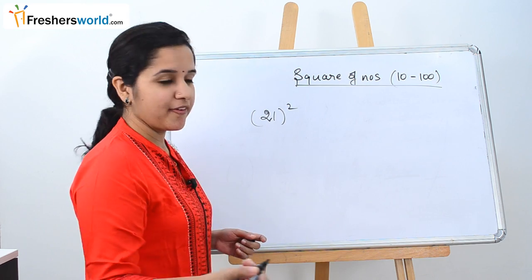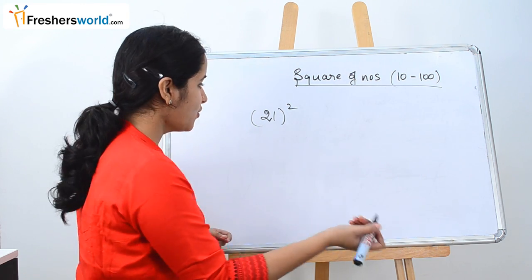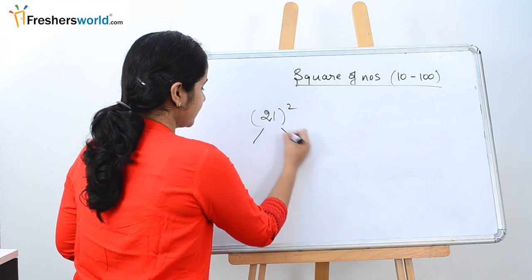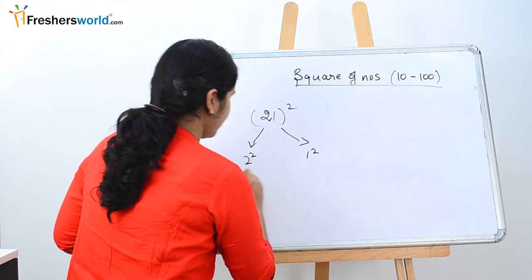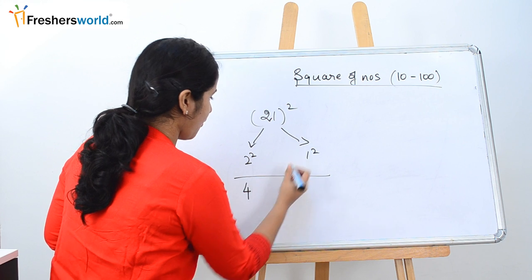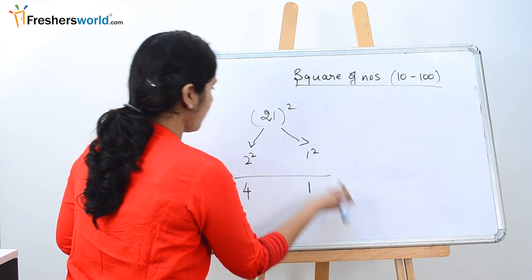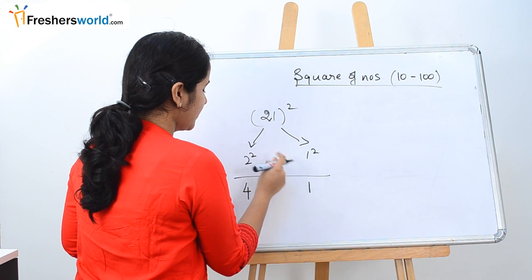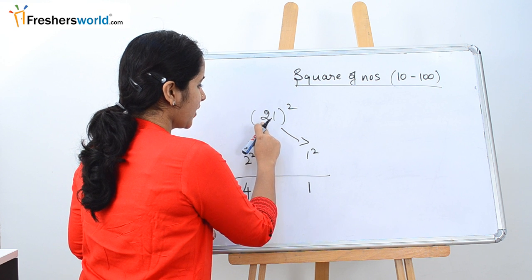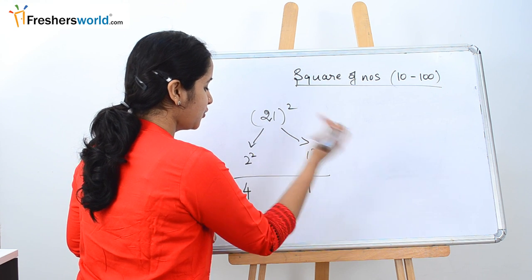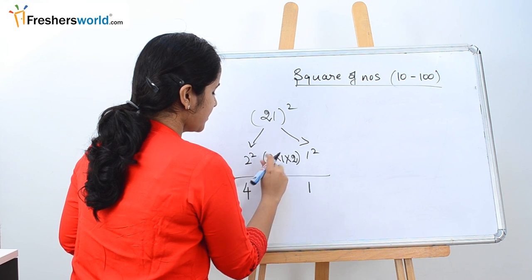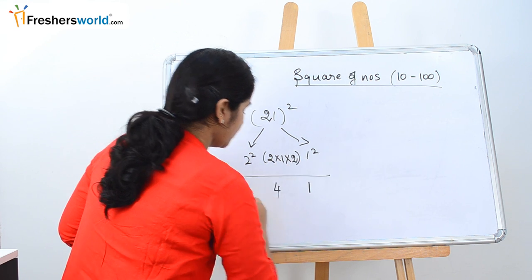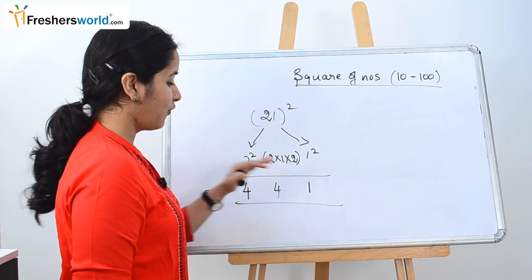So they are asking us to find 21 square. So how we are going to do it in this method is, first we are going to take 2 square and 1 square, which is nothing but 2 square is 4, 1 square is nothing but 1. Then what we are going to do is multiply 2 into this next number into 2. So it is nothing but 2 into 1 and we are going to multiply it again by 2. It is nothing but 2, 1, 2, 4. So we get easily the answer as 441.